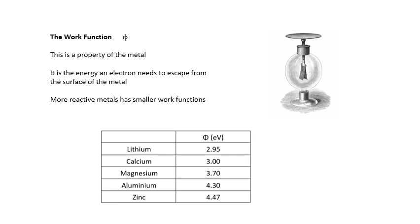So it's a property of the metal. Phi, the symbol phi, Greek letter phi. It's the energy an electron needs to escape from the surface. More reactive metals have smaller work functions. The picture is a thing called the gold leaf electroscope. It's how you can demonstrate the photoelectric effect. You've got the piece of metal on the top and you've got these very thin bits of gold, which when it's charged up, they repel each other. And then when it loses its charge, they go down again.